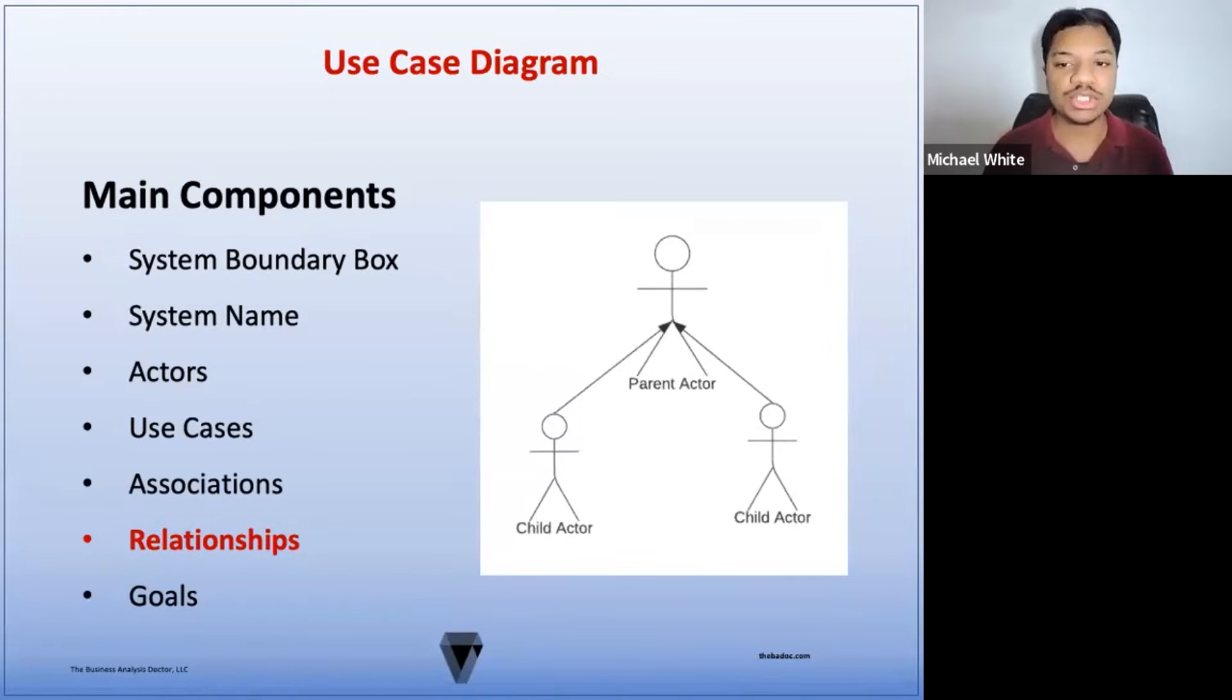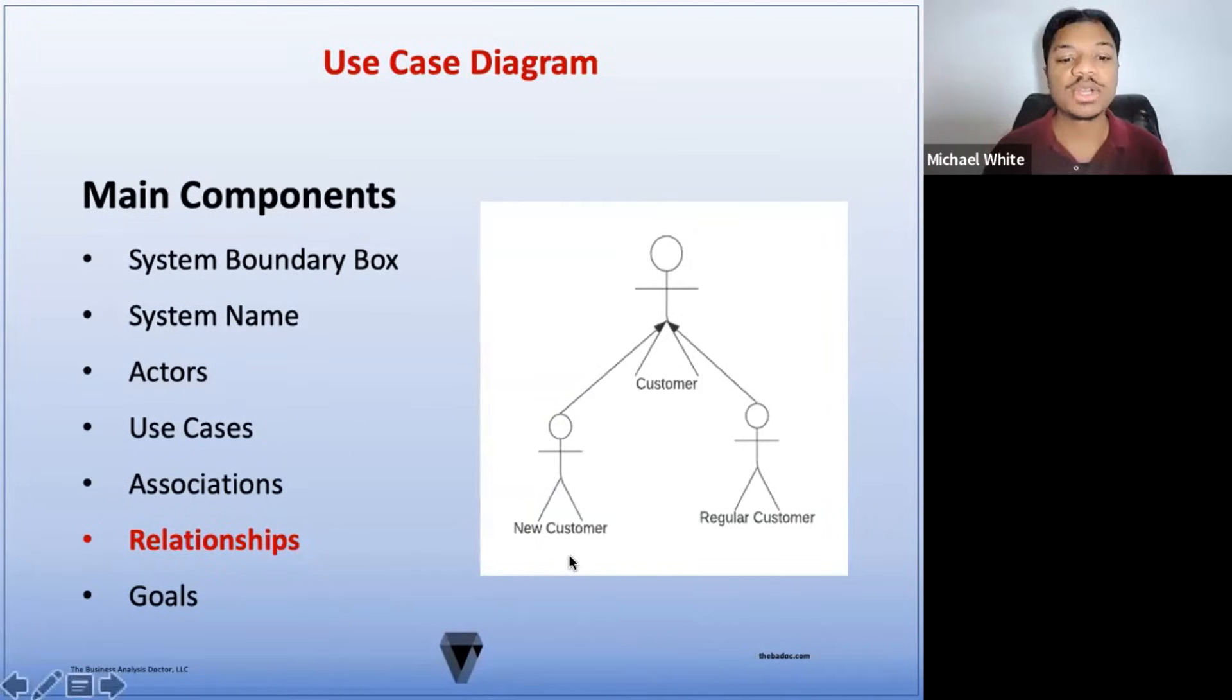The generalization relationship can also apply to actors, where the child actors inherit the general functionality of a parent actor. For example, you may have a general customer actor, and that role may be segmented into two different levels of authorization. The regular customer might inherit the general customer capabilities, but they'll also have maybe additional capabilities and privileges for maintaining their service. The new customer, on the other hand, may have limited functionality or capabilities. So while they are inheriting the general customer functionality, they may have deposit or withdrawal limitations for a short period of time.